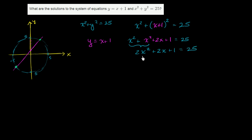Now, we could just use the quadratic formula, but we have to be careful. We have to set this equal to 0, and then use the quadratic formula. So let's subtract 25 from both sides. And you get 2x squared plus 2x minus 24 is equal to 0.